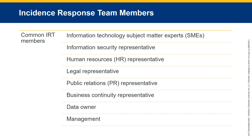The Information Security Representative provides risk management and analytical skills and may also have specialized forensic skills needed to collect and analyze evidence. The Human Resources Representative provides skills on how to deal with employees. Breaches do not always come from outside attackers — when internal employees are involved, the HR Representative advises the team on proper methods of communicating and dealing with employees, and is an expert on HR policies, disciplinary proceedings, and employee counseling.